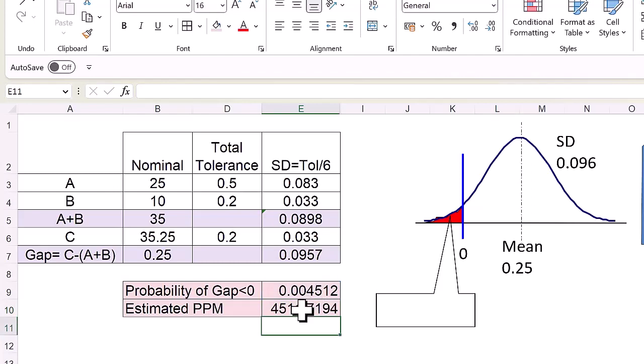So, without actually manufacturing parts, we have estimated that the PPM level with these tolerances is likely to be about 4500. This may not be a very precise number but provides good guidance for our planning at the design level.